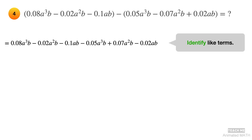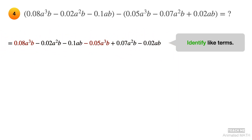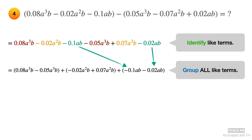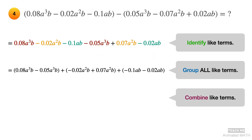Distribute the negative sign and identify like terms. Next, group all like terms and arrange them in standard form. Group the terms with a squared. Group the terms with a squared b. Group the terms with ab. Last, combine like terms using addition and subtraction. And the final answer is 0.03a cubed b plus 0.05a squared b minus 0.12ab.